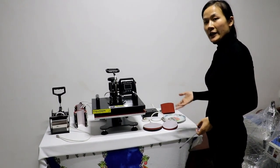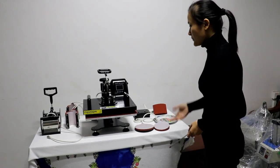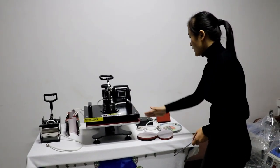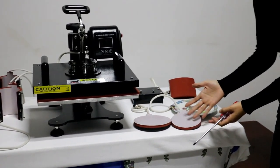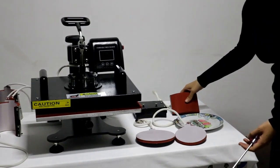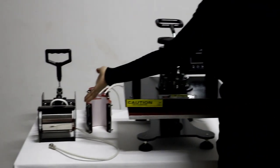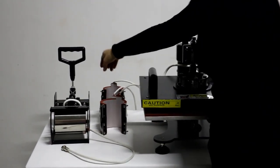This is the STC 8-in-1 multifunction combo heat press machine. This is the main machine, the controller, and the plate. We have two plates, a cap for the head, and the mark part. We have four sets of the mark.